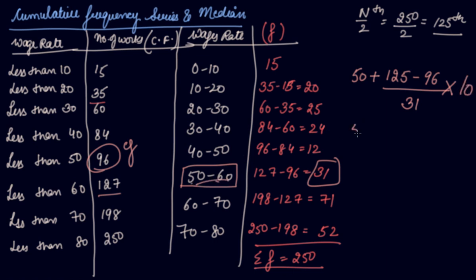So you can find out very easily now. 29 divided by 31 into 10. So 50 plus 9.35, so it comes out to be 59.35 is your median wage rate. So from 50 to 60, it lies between 50 to 60. So 59.35 is your median wage rate.